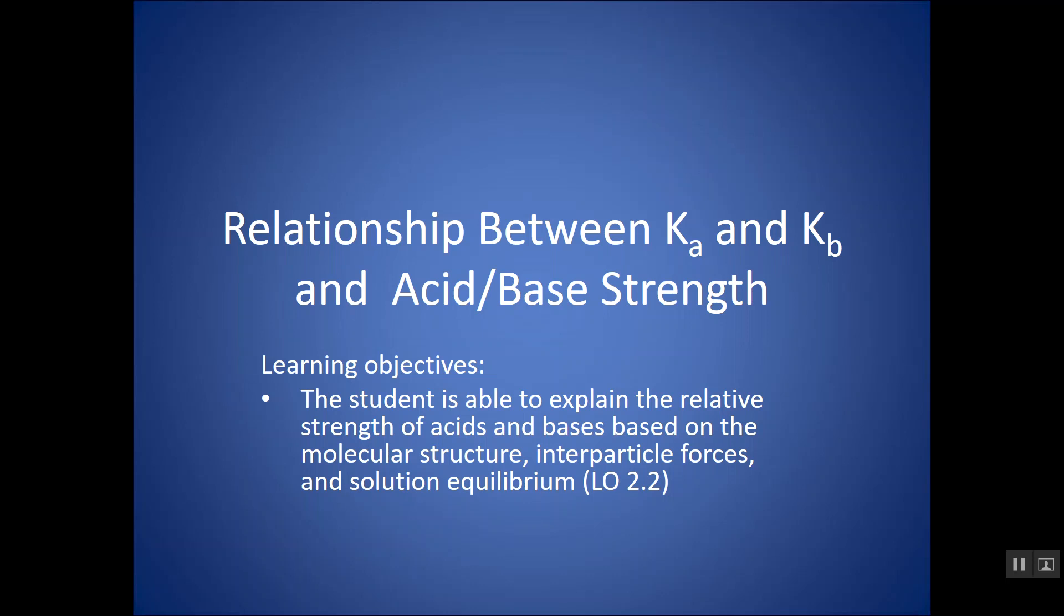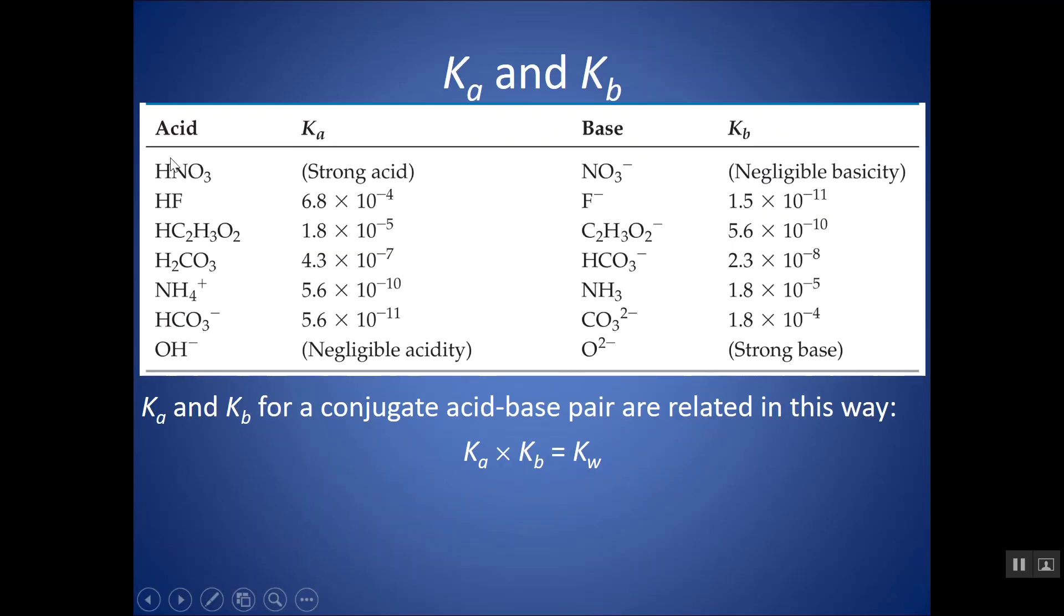I want to take a quick look at the relationship between Ka and Kb for conjugate acid-base pairs. If we take a look at HNO3 as an acid, according to the Bronsted-Lowry definition, it would be donating an H+ and turn into its conjugate base, NO3-.